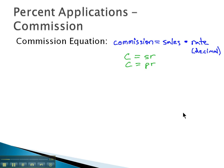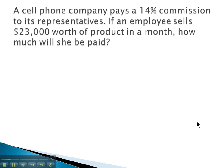Let's take a look at a couple commission examples. A cell phone company pays a 14% commission to its representatives. If an employee sells $23,000 worth of product in a month, how much will she be paid?